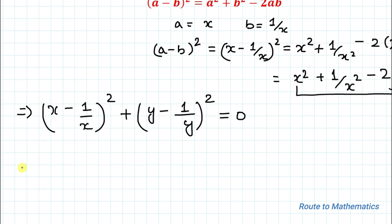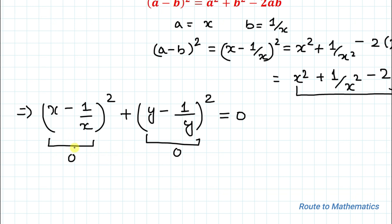So we need to find the values of x and y that satisfy the equation (x - 1/x)² + (y - 1/y)² = 0. This term, x - 1/x, and y - 1/y, must both be 0, because 0 + 0 = 0. In order to satisfy this condition, both terms must equal zero.